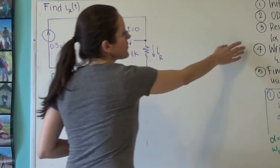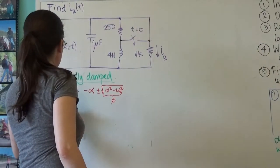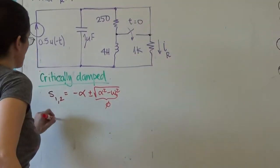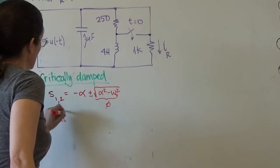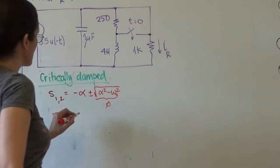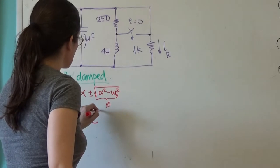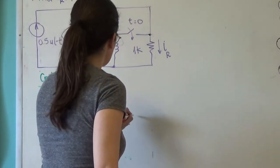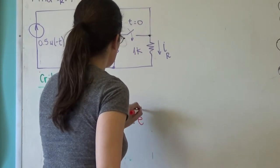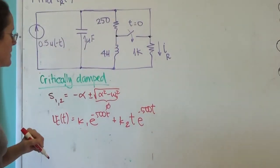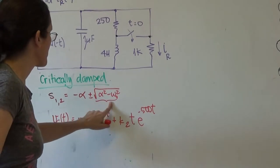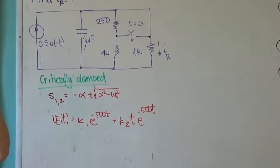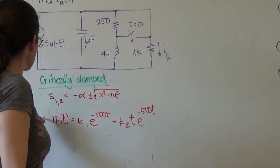So the solution — which is my number four — is the voltage on the capacitor at time t. This is the first time I'm actually writing the solution to the circuit: it is k1·e^(−500t) plus k2·t·e^(−500t). This comes from the case of two repeated roots, where the second term gets multiplied by t. So this is the answer for number four.